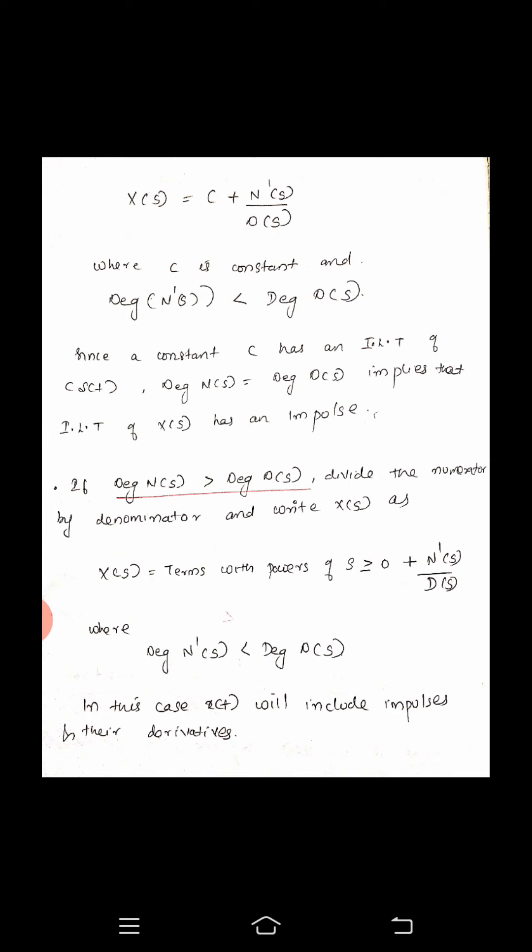Now there is a second case: if the degree of numerator is greater than the degree of denominator. Then again, we divide the numerator by the denominator and write x of s as terms with power of s greater than or equal to 0, plus a new fraction — numerator of s by denominator of s — where the new fraction's degree of numerator will be less than degree of denominator. Due to the first term, that is terms with power of s greater than or equal to 0, x of t will include impulses as well as their derivatives. These are the three cases encountered while performing the partial fraction expansion for taking the inverse Laplace transform.